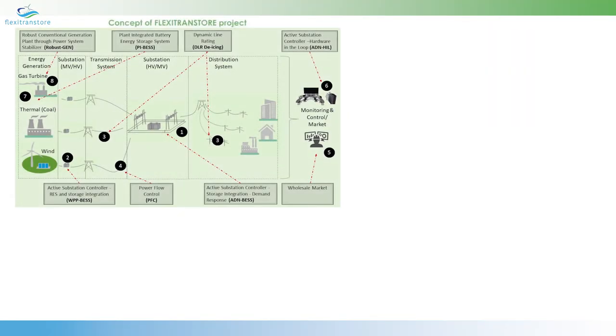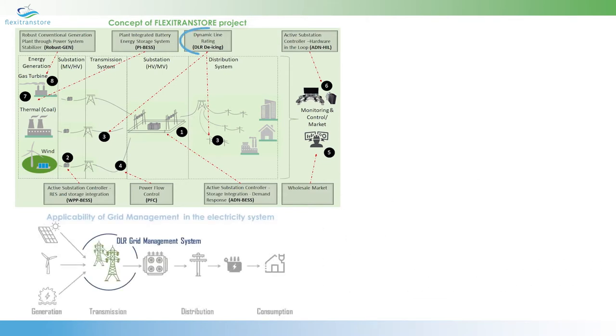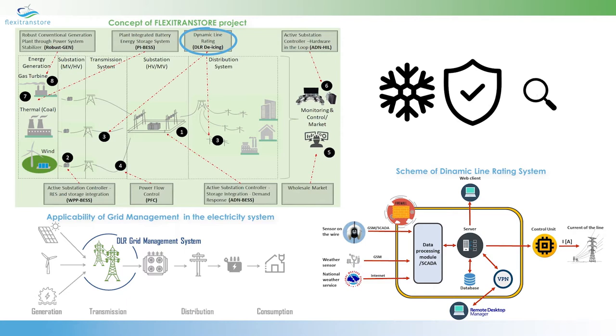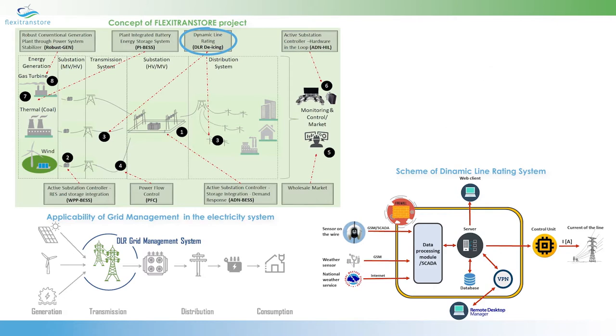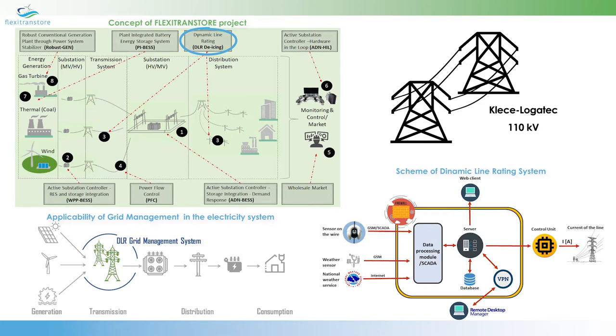Under the framework of Flexitranstor Workback X7, the development, implementation and maintenance of a dynamic line rating based expert system for power lines is taking place. Dynamic Line Rating or DLR for short enables the higher thermal utilization of power lines. Furthermore, an icing prevention and detection subsystem is integrated in order to forecast ice formation on power line conductors. In this video, the system implementation and operation on the Klece Logatech 110 kV demo overhead line is presented.